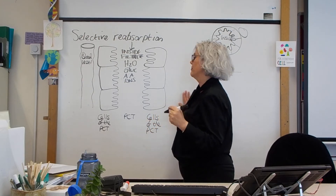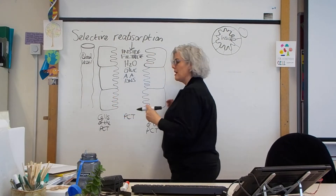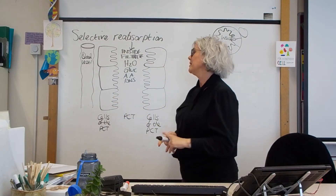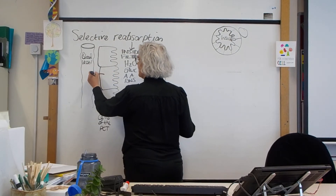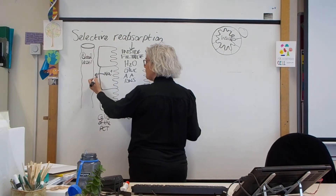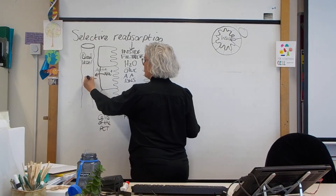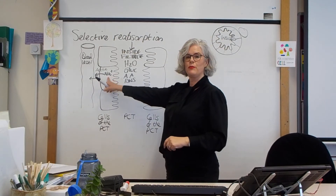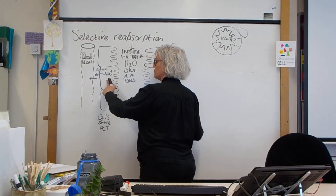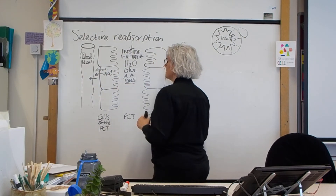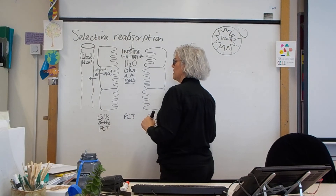The first thing we're going to talk about is sodium ions. These cells contain sodium ions. There has to be an active process first to create a gradient — a means by which we can bring things out of the filtrate and into these cells. So sodium ions are actively transported out of these proximal convoluted tubule cells into the blood, reducing the sodium ion concentration inside the cells.